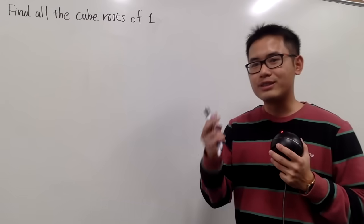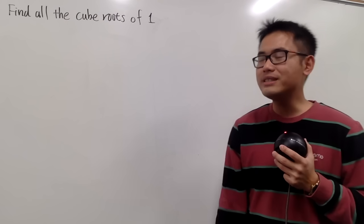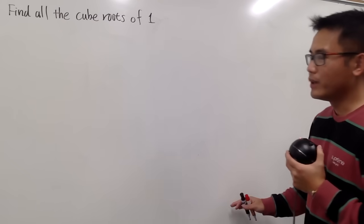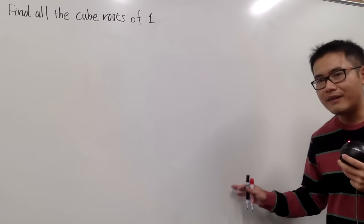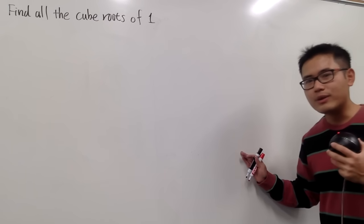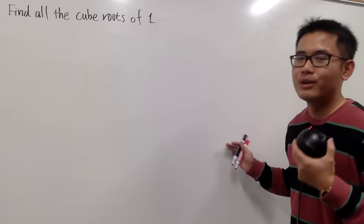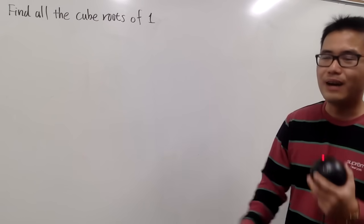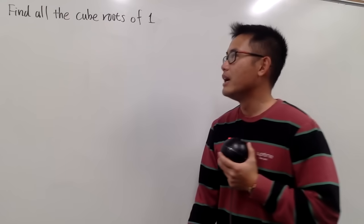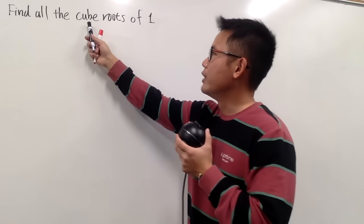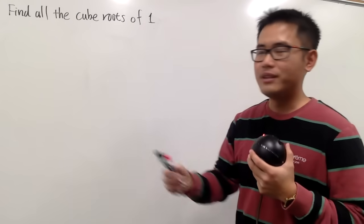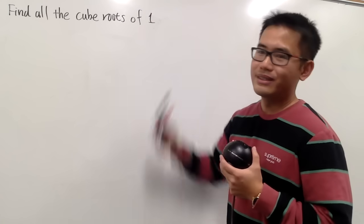I will show you guys two ways to do this. The first way is just going to be algebra, and then the second one is that we will have to use sine, cosine, and also the polar form of a complex number to help us out. By the way, this is also called the cube root of unity. The unity is the number 1.